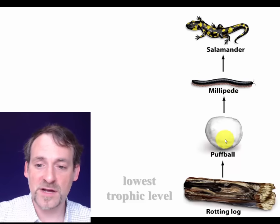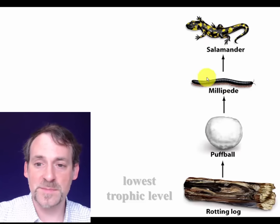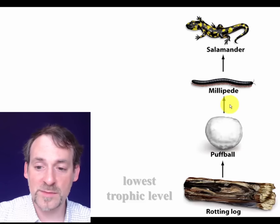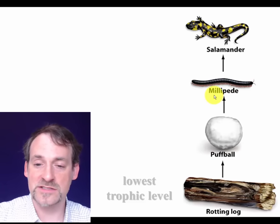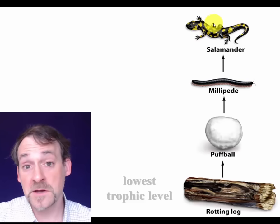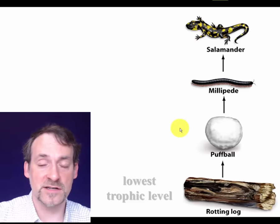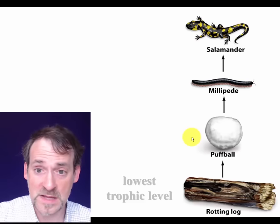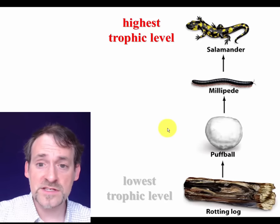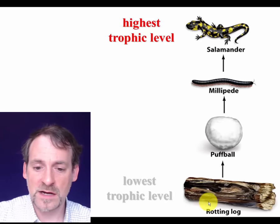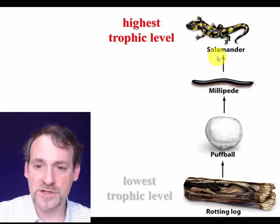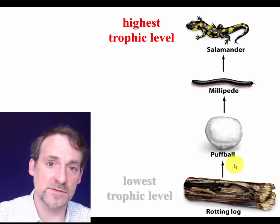If millipedes eat puffballs, they are on the next trophic level up. And if salamanders eat millipedes, they are the next trophic level up. These would be primary consumers, secondary consumers, and tertiary consumers. If something eats salamanders, that's at a higher trophic level still. So in this food chain, you're going up from the lowest trophic level through the consumers to the highest trophic level.